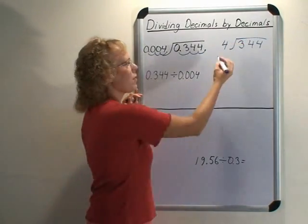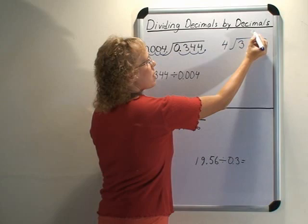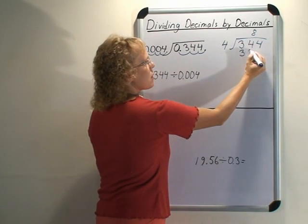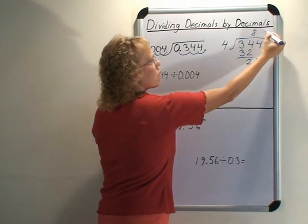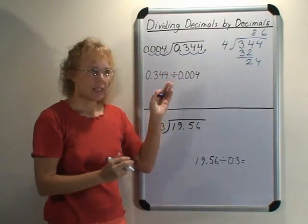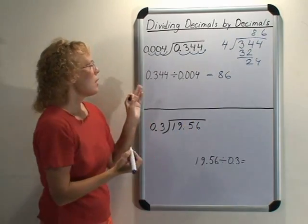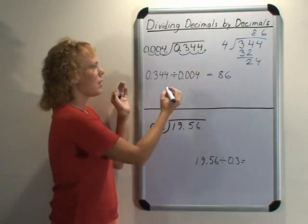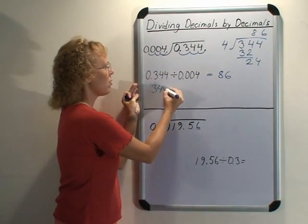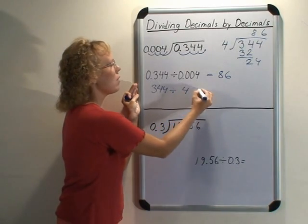And now we divide normally. Four goes into 34 eight times, six times. Okay, so the answer is 86. The answer to the original problem is 86, and the answer to 344 divided by 4 is 86.